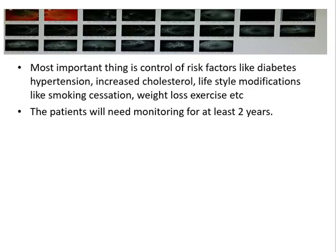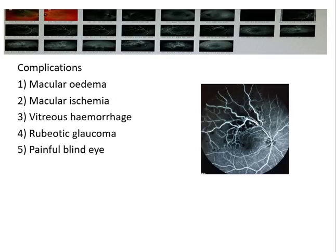The most important step is controlling risk factors — diabetes, hypertension, and hyperlipidemia are crucial. Lifestyle modifications such as cessation of smoking, weight loss, and exercise are important. Once a patient develops vein occlusion, even if asymptomatic, monitoring for at least two years is needed. Complications include macular edema, macular ischemia, vitreous hemorrhage, and rubeotic glaucoma, which can sometimes lead to a painful blind eye.